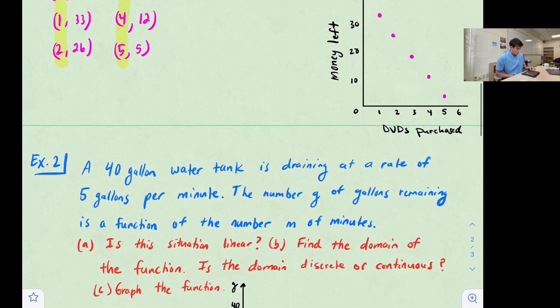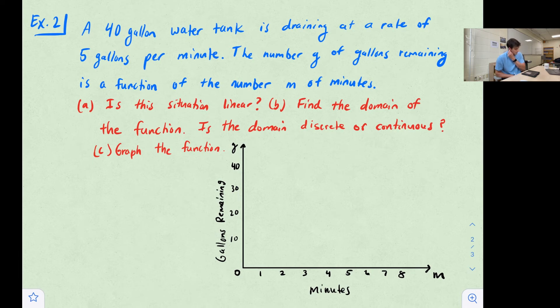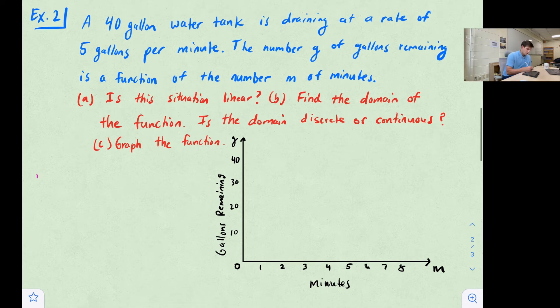Okay, so let's look at example two. Example two tells us that we have a 40 gallon water tank and it's draining at a rate of 5 gallons per minute. The number G of gallons remaining is a function of the number M of minutes. So part A says, is this situation linear? Well, to answer that question, we need to think about the rate at which this tank is draining. So it tells us it's 5 gallons per minute.